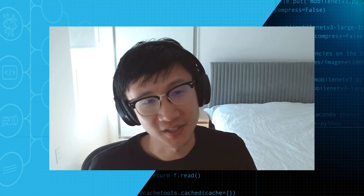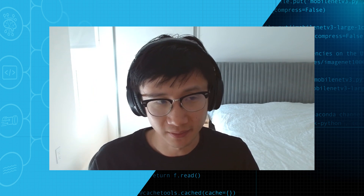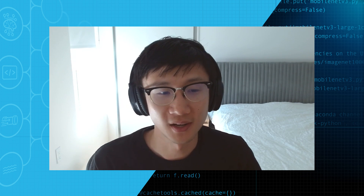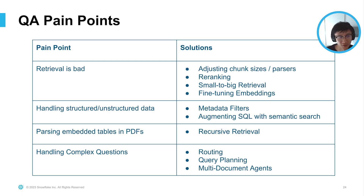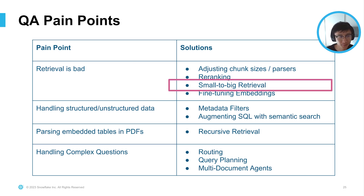Another way to look at optimization is by specific pain points and candidate solutions. Some of the main pain points are: retrieval is bad — if you don't have good retrieval, you won't have good RAG — handling structured and unstructured data, parsing embedded tables in PDFs, and handling complex questions. Let's start with the first: retrieval is bad. A candidate solution is an advanced retrieval technique called small-to-big retrieval.